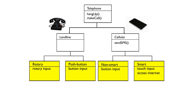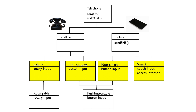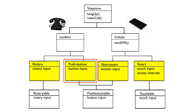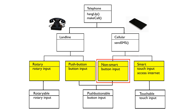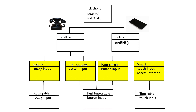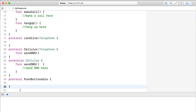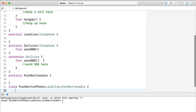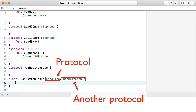We could also set up protocols that manage the functionality of different input techniques. We could have a rotaryable protocol for dealing with rotary input, a pushbuttonable protocol for dealing with pushbuttons, and a touchable protocol for dealing with touchscreens. Now when we set up a pushbutton phone class, it could adopt both the landline and pushbuttonable protocols. On the cellular side, the non-smart class could adopt both the cellular protocol and the pushbuttonable protocol. In code, it's pretty straightforward to adopt multiple protocols — you just add any additional protocols to the class definition, separated with commas.